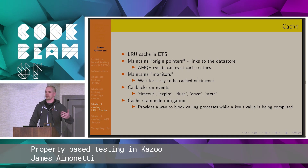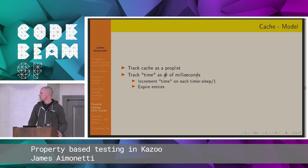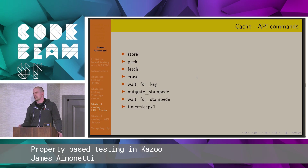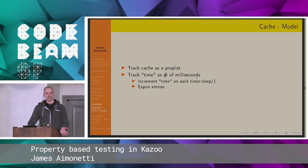There are all these fun little operations we've added over time, and they can be modeled as API commands. We can model the cache as a simple prop list. The other thing we need is the LRU part — we need to time out cache entries when they expire. We track time as milliseconds. When we start the test, time is zero. We have timer sleep calls that we mock, and we increment the time in our model to match the timer sleep, assuming most other APIs execute within a millisecond. I don't know if this is the best way to model time, but it works pretty well for us. I'd love to hear if people have other strategies.